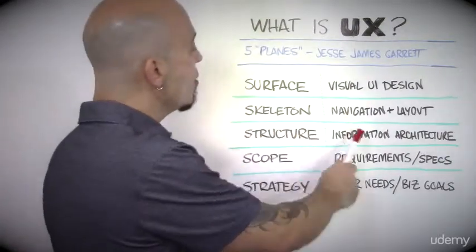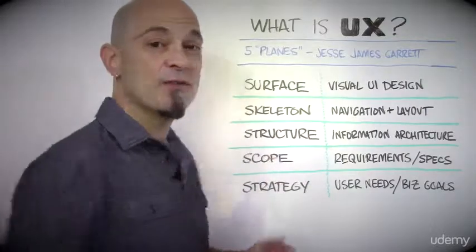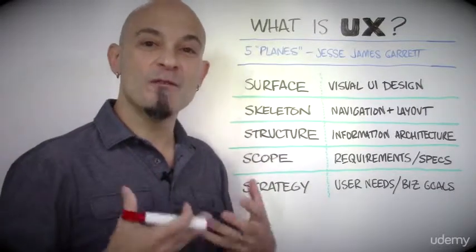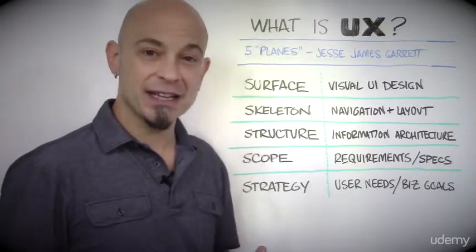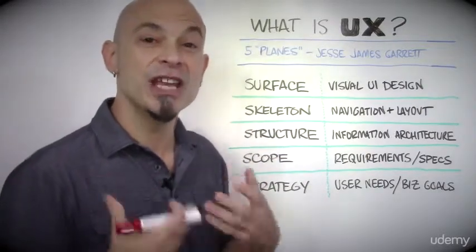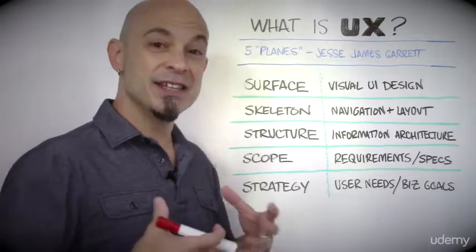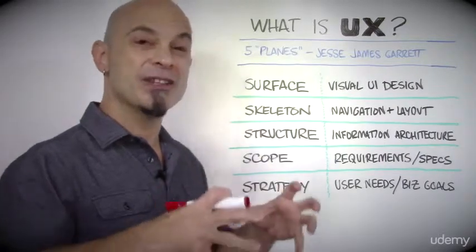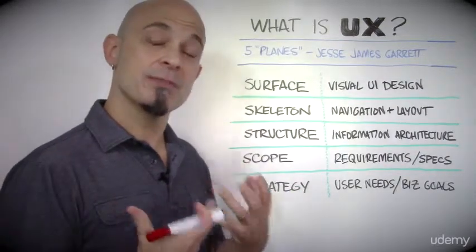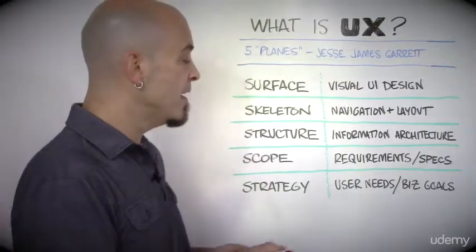From there, we get to the surface plane, which is final visual UI design — styling, fonts, colors, images. This is where everything becomes very real. It's the part that people see.